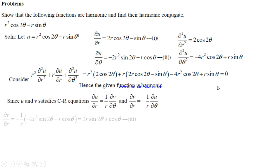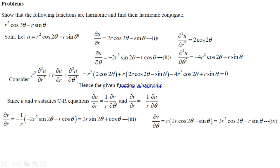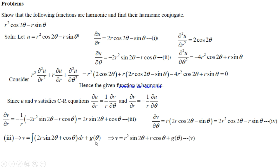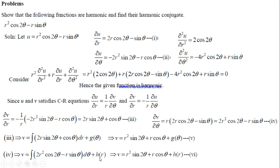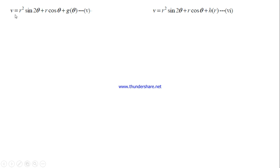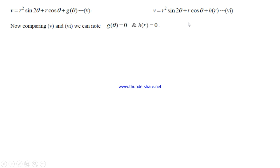Using the CR equations, we write ∂v/∂r from ∂u/∂θ and ∂v/∂θ from ∂u/∂r. Integrating ∂v/∂r with respect to r gives an expression with integration constant g(θ), and integrating ∂v/∂θ with respect to θ gives an expression with integration constant h(r). Comparing these two expressions, we identify g(θ) = 0 and h(r) = 0, giving v = r²sin(2θ) + r·cosθ.